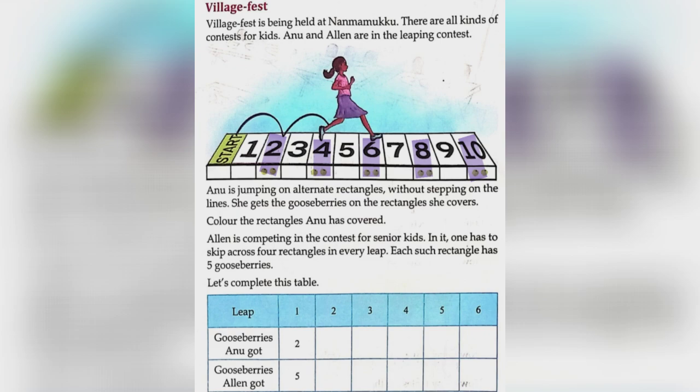Ellen is competing in the contest for senior kids. In it, one has to skip across 4 rectangles in every leap. Each such rectangle has 5 gooseberries.